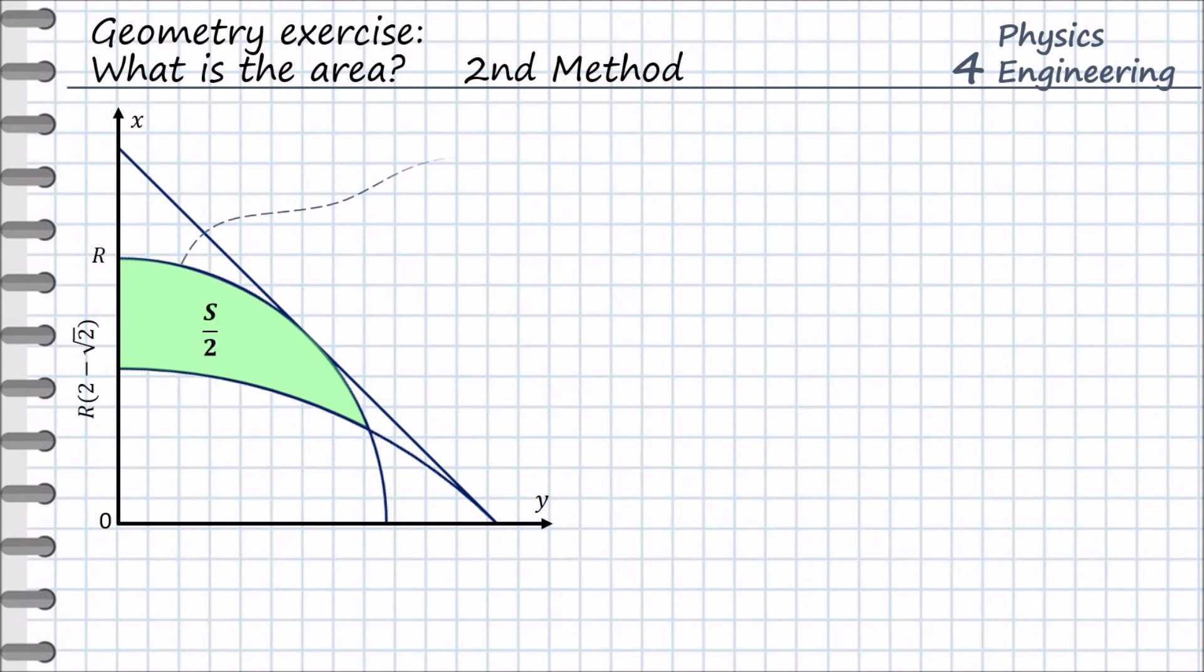We define the cross point between the circles and coordinate system, and we define the functions for the outer and inner curves. This will be two parts of the circles, one circle with radius r, and second circle with radius 2r. We find the cross point of these two functions by solving this equation.